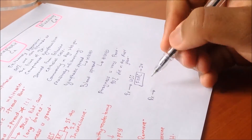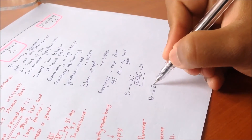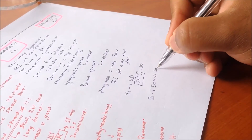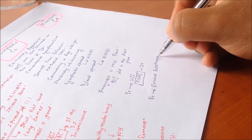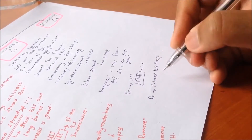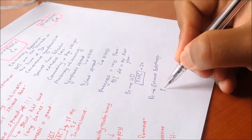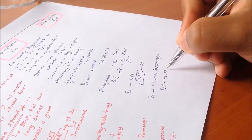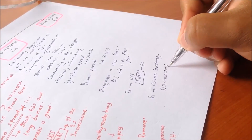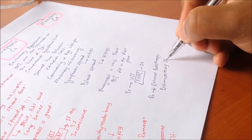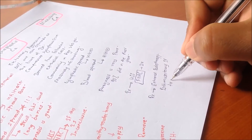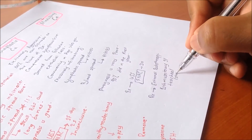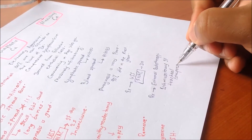Treatment for anaplastic carcinoma does not include thyroidectomy. Management consists of external radiotherapy and relieving compression — palliative therapy. An isthmusectomy may be performed if there is tracheal obstruction. Other than that, there is no proper treatment available.